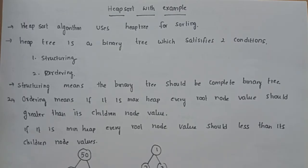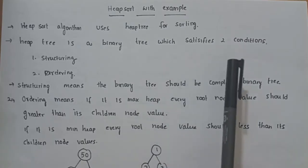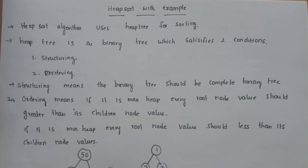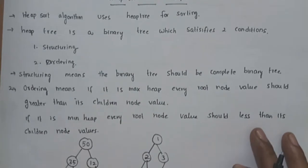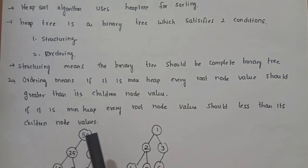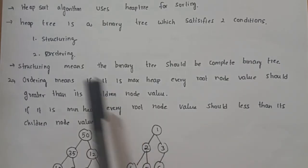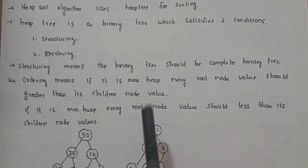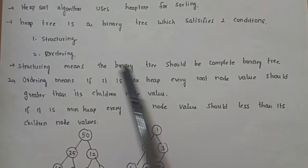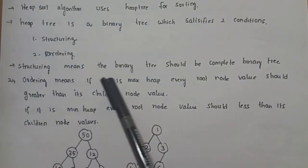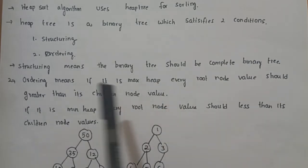A Heap Tree is a binary tree. In a binary tree, we have at most two children — they can have zero or one. That is a binary tree. So, Heap Tree is a binary tree with two conditions satisfied.